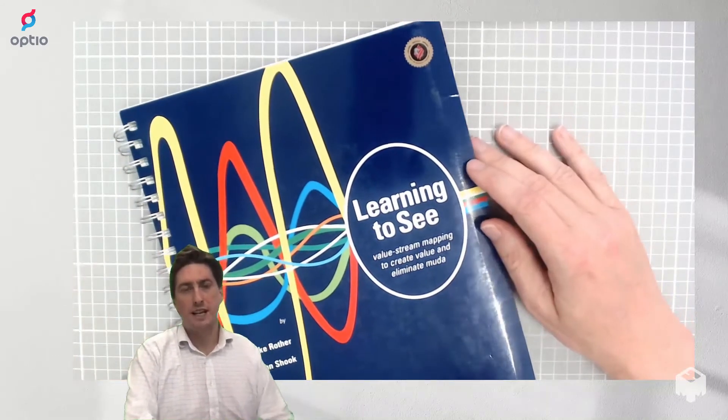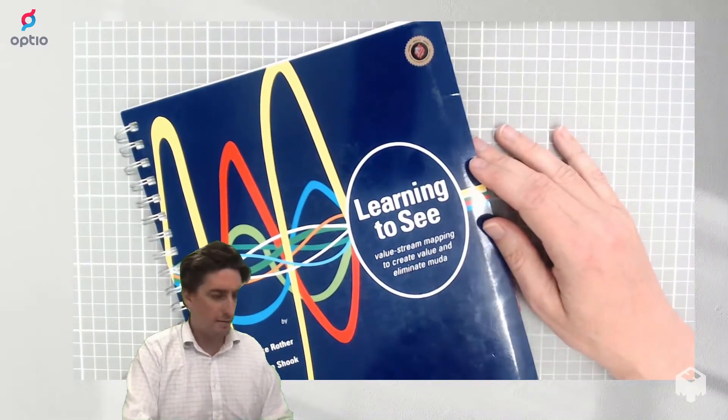Hi, I'm Nicholas Quirrell, I'm the founder of Optio and today I will talk about the book Learning to See by Mike Rother and John Schuch.